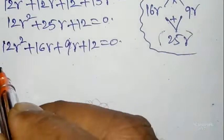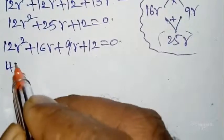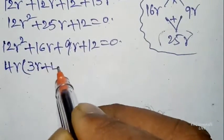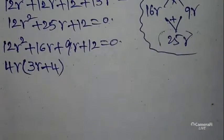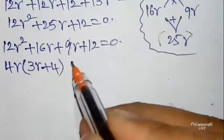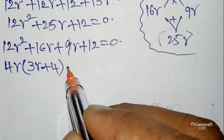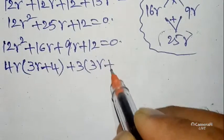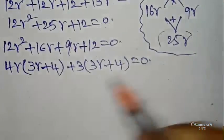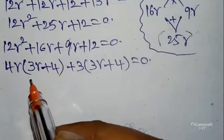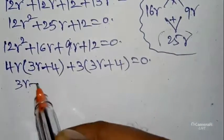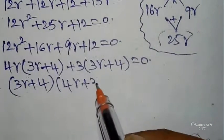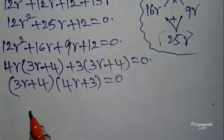Substituting: 12r² + 16r + 9r + 12 = 0. From the first two terms, 4r is common, giving 4r(3r + 4). From the last two terms, 3 is common, giving 3(3r + 4) = 0. From the first bracket and last bracket, (3r + 4) is common, so the factorization is (3r + 4)(4r + 3) = 0.